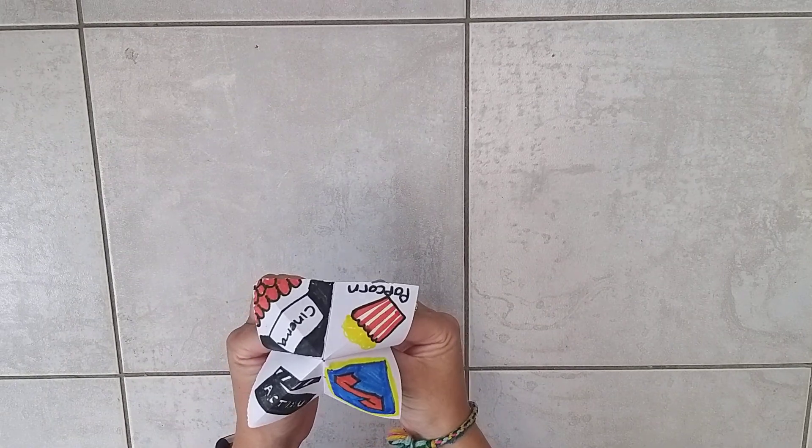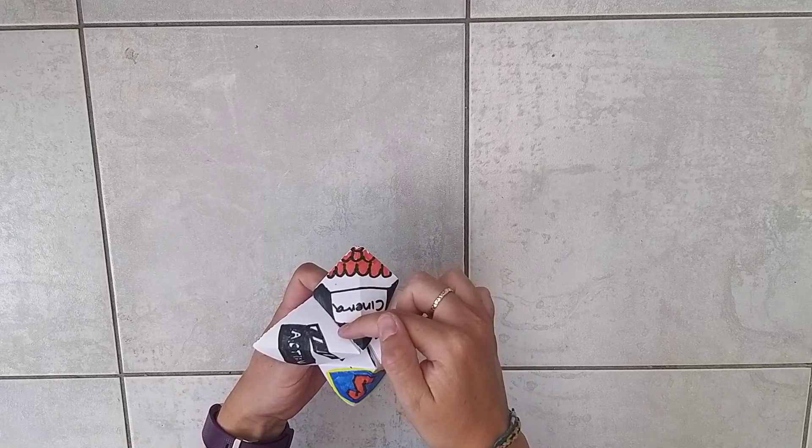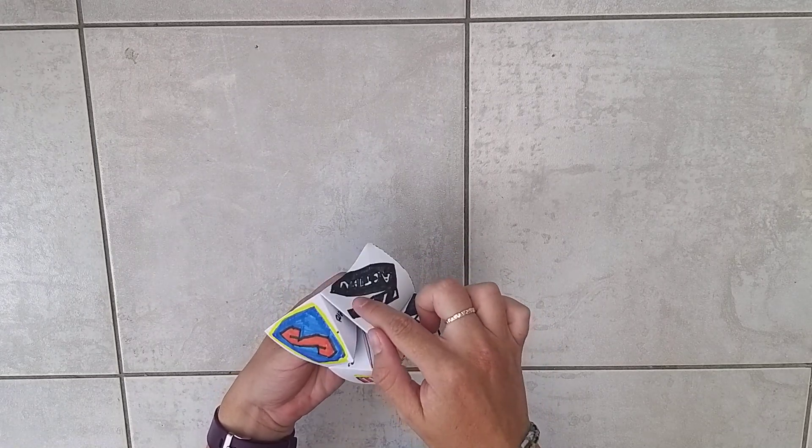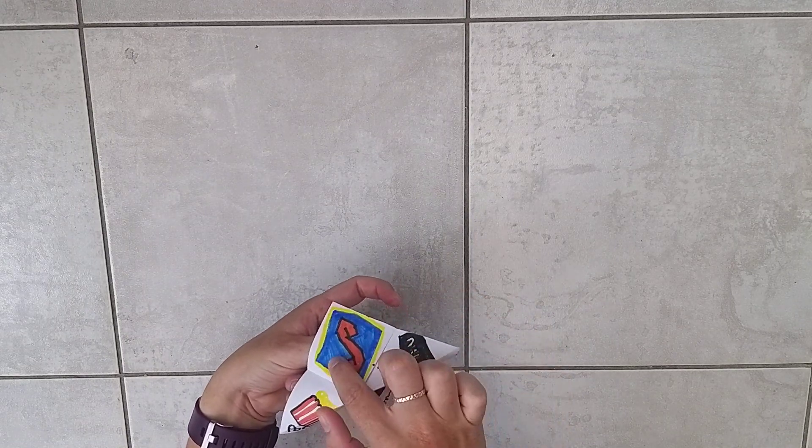I have got my movie picker. I've drawn popcorn, the cinema, my seats, and that's my screen. One of the clapperboards, action, and then a Superman S. It's probably the wrong colors but oh well.